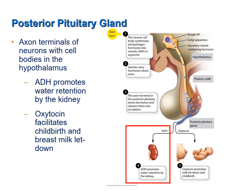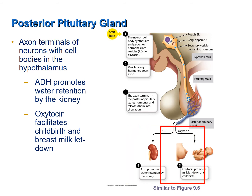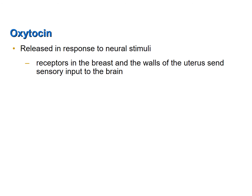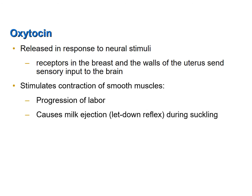Now let's talk about the second hormone released by the posterior pituitary gland: oxytocin. Oxytocin facilitates childbirth and the letdown effect, where milk is ejected from the breast during suckling. Oxytocin is released from the posterior pituitary gland in response to neural stimuli. Receptors in the breast detect pressure during suckling, or during the birthing process, receptors in the uterus detect pressure and send sensory input to the brain, resulting in the release of oxytocin. During labor, oxytocin enters the blood and causes the progression of labor contractions. During suckling, oxytocin causes the smooth muscles of the breast to eject milk.